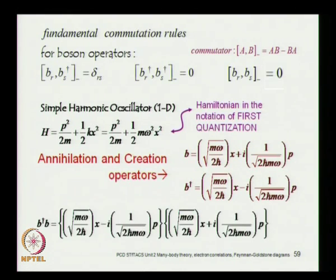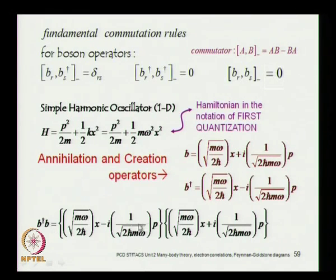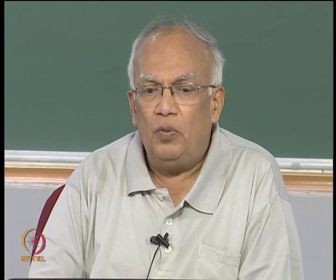Now construct the operator b-dagger·b. b-dagger has two terms and b has two terms, so we write b-dagger·b in terms of position and momentum operators. Carrying out the operator algebra gives four terms: a term in x-squared, a term in x·p, a term in p·x, and finally a term in p-squared, with appropriate coefficients taken care of.